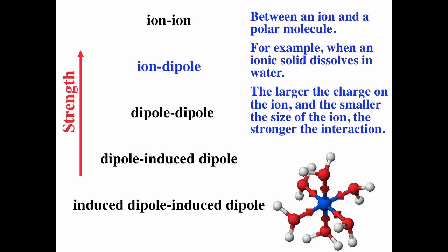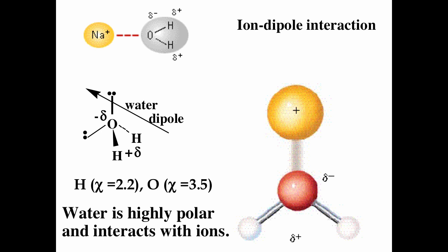The ion-dipole interaction — when you see 'dipole,' think polar molecules. Ion-dipole is just the interaction between an ion and a polar molecule. The most common example is dissolving an ionic solid in water. Water is very polar, so there's a strong ion-dipole interaction between the water molecule and the ion. Water has a partial negative charge on the oxygen because oxygen is more electronegative, and a partial positive charge on the hydrogen. Positive ions are attracted to the oxygen side of the water molecule, and negative ions are attracted to the hydrogen side.